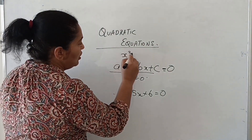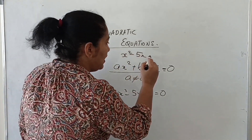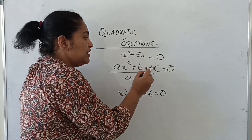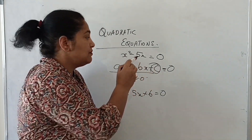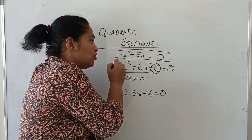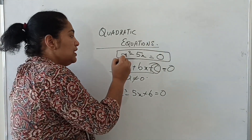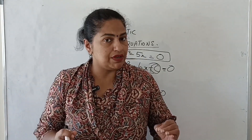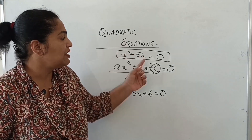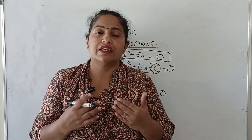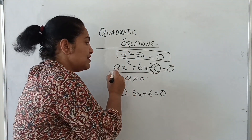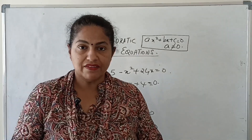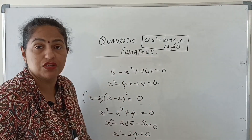Now if our polynomial is x² − 5x and we are equating this to zero, will this become a quadratic equation even though we do not have the term c? Yes — x² − 5x is a quadratic polynomial because a is not equal to zero, it is equal to one. Whenever a quadratic polynomial is equated to zero we get a quadratic equation. This is the standard form of the quadratic equation.